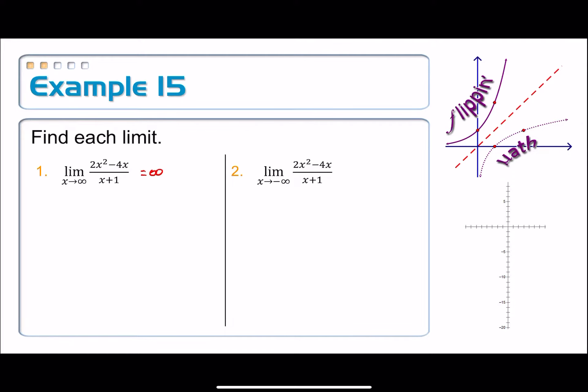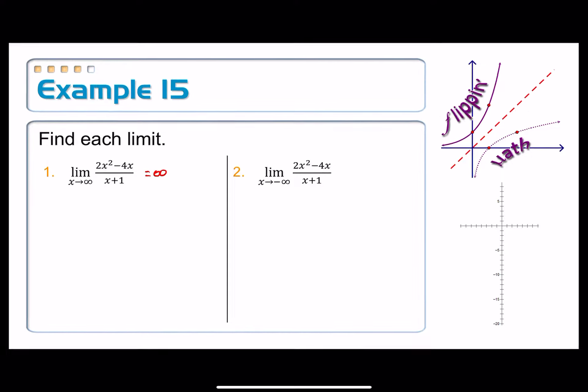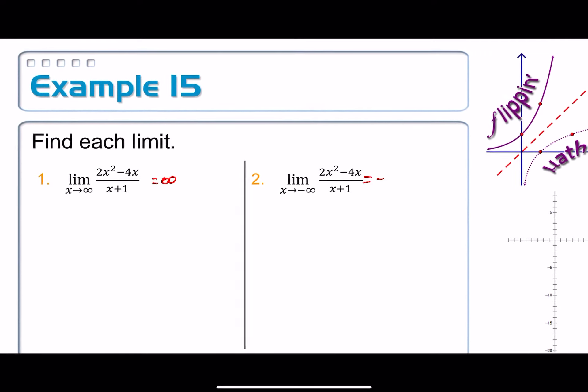And over here on number two, again, in terms of relative growth rate, this top is growing faster than the bottom. A square grows faster than a linear, so this should overtake the bottom. However, we have a special case where we have two times infinity squared, that's a positive infinity, but then minus four times infinity, that's also a positive infinity. So you got a positive up top, but then you have a negative on the bottom. This should be reaching a negative infinity.